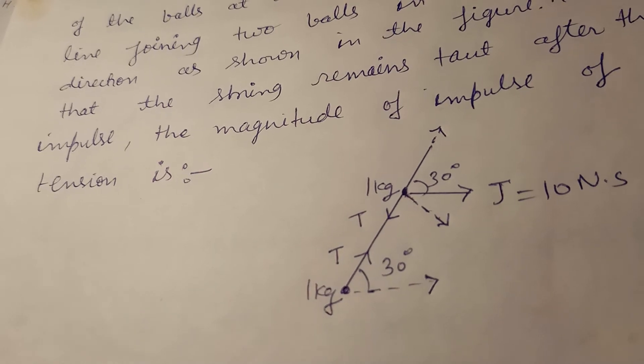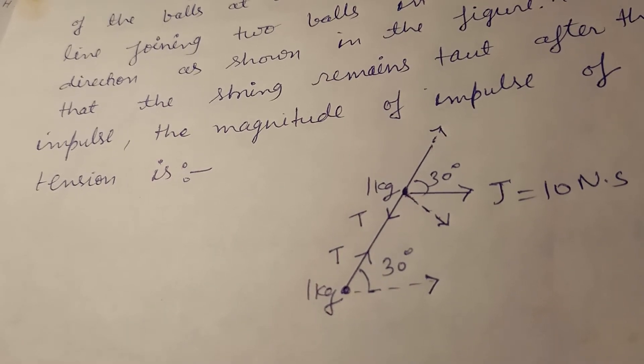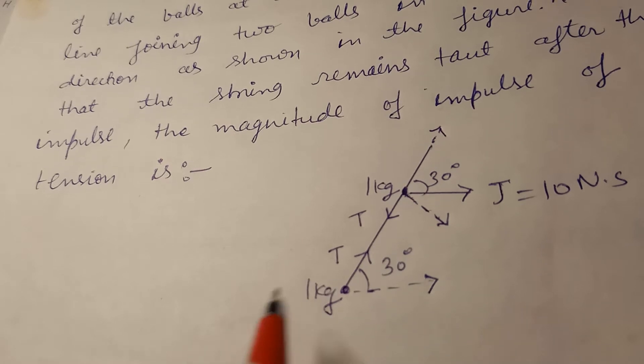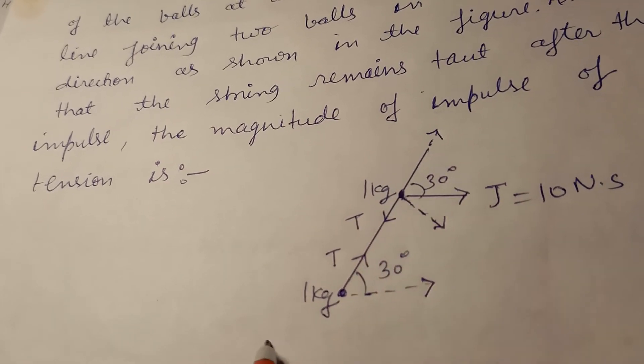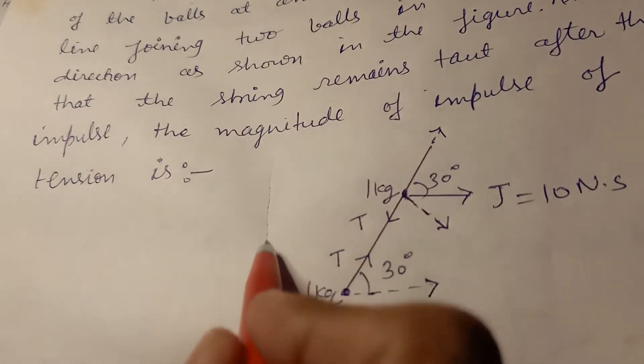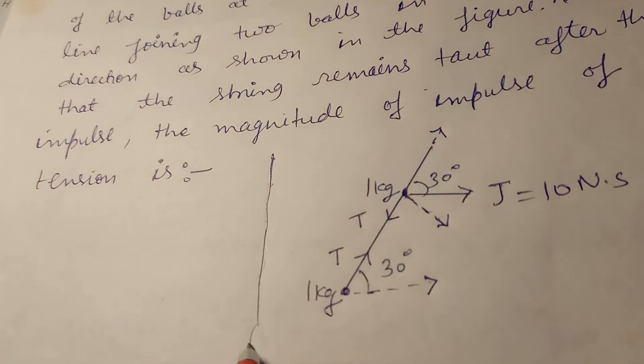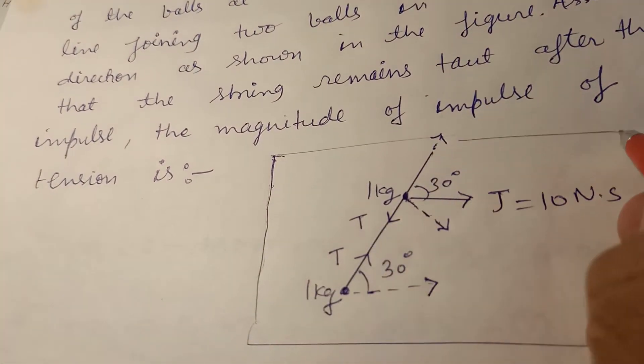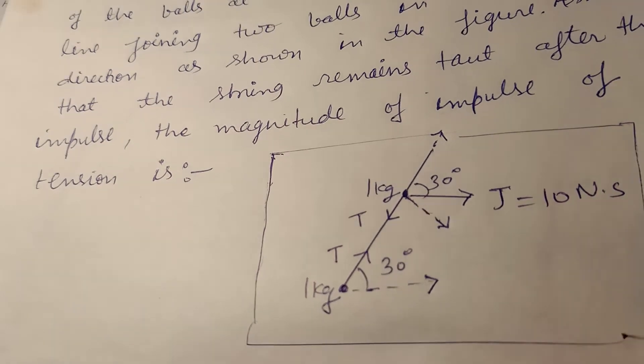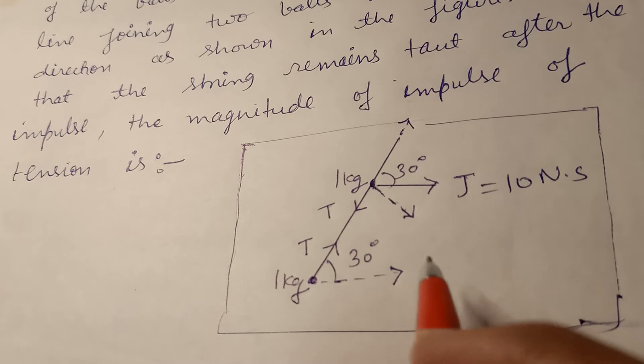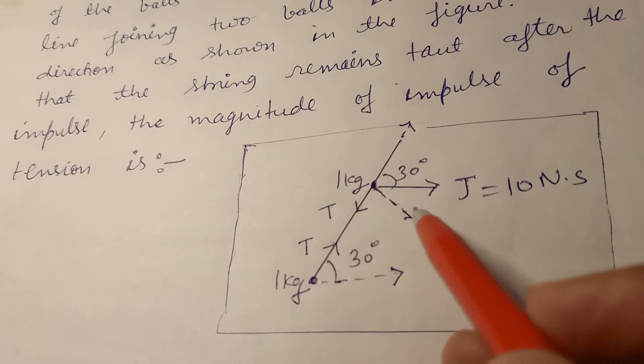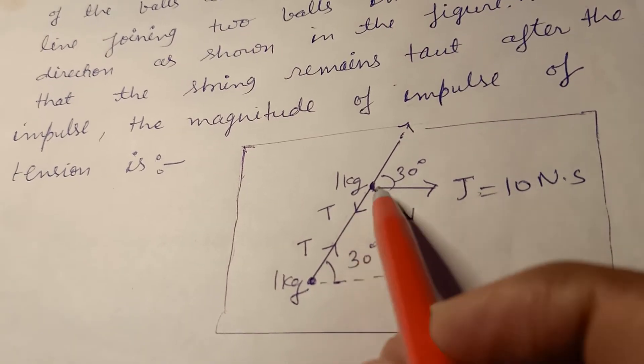Now let's start. What you have to do is perform impulse balance on both the balls. This is the table on which it has been put.